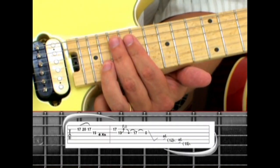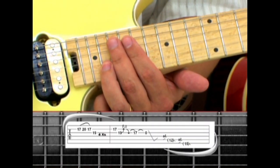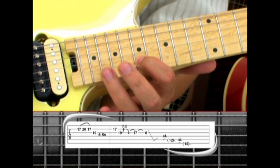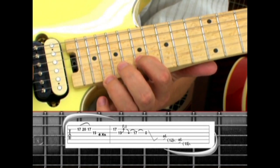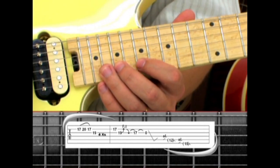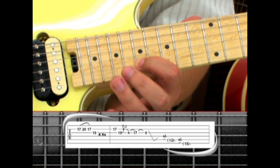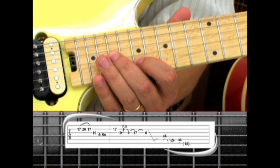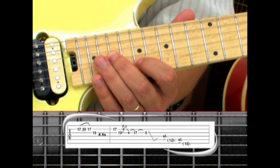To wrap up the solo, we start phrase seven with hammer pulls on the second string seventeen, twenty, seventeen, then third string nineteen. Use your index finger for seventeen, ring for twenty, pull off to seventeen, then middle finger for nineteen. This is played four times.